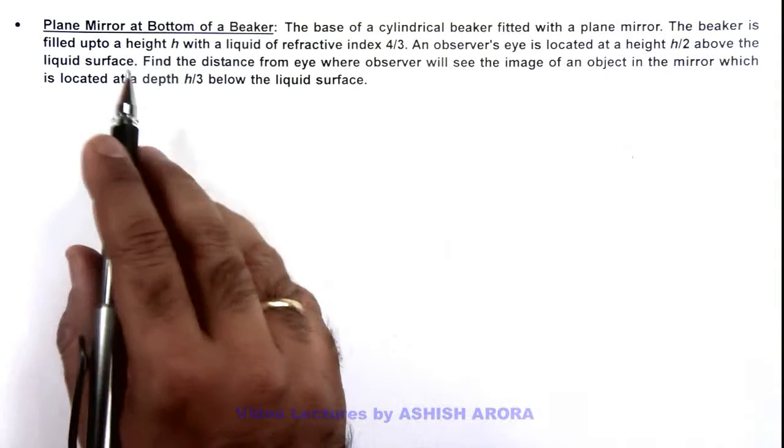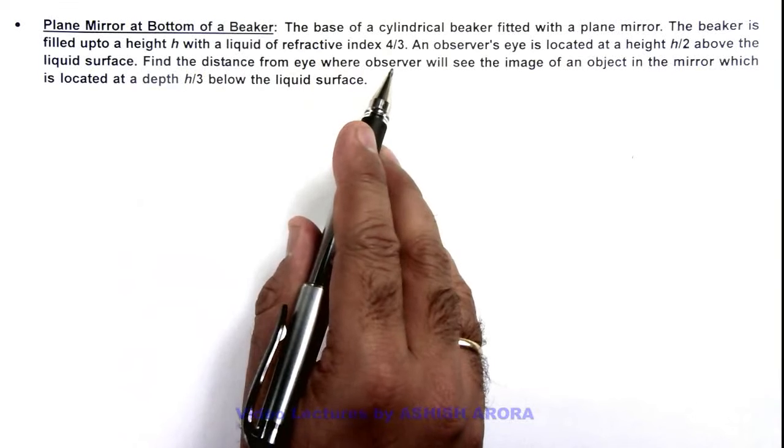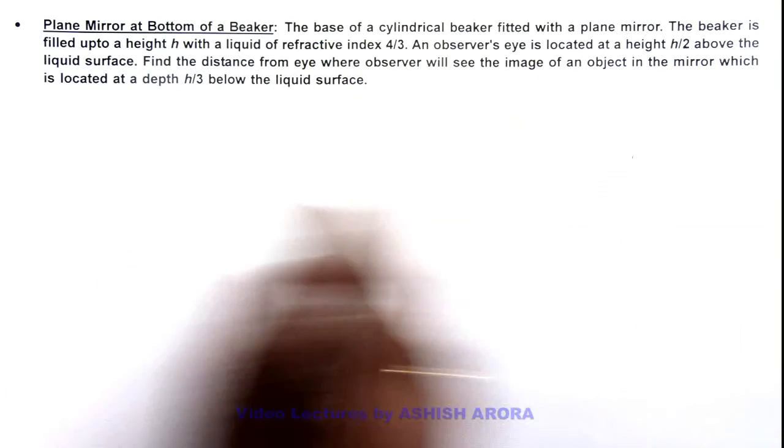The beaker is filled up to a height h with a liquid of refractive index 4 by 3, and an observer's eye is located at a height h/2 above the liquid surface.